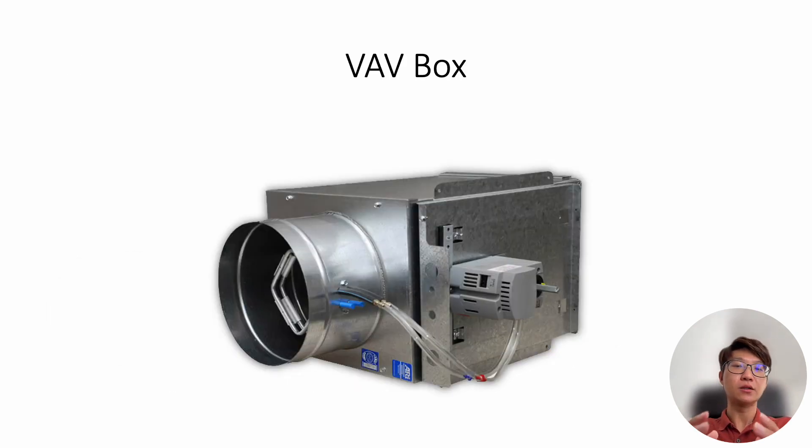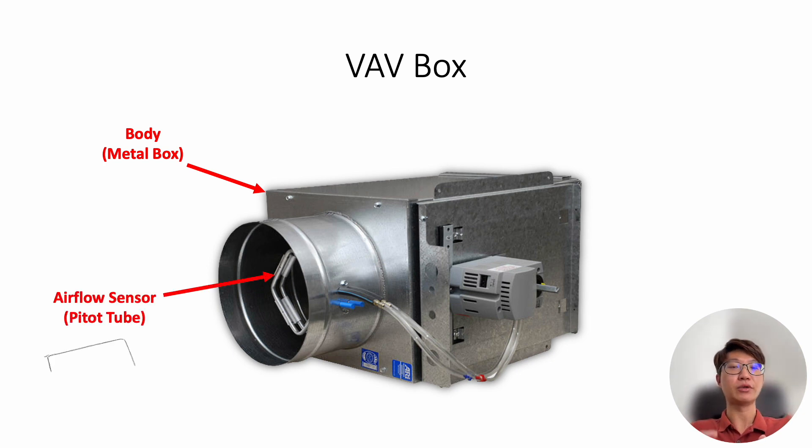So let's take a closer look at the VAV box itself. So the first thing we can see is the metal box. The body of the VAV box is usually made of galvanized iron material, GI. Then the second thing we can see is at the inlet of the VAV box we have an airflow sensor. It's usually just the pitot tube.